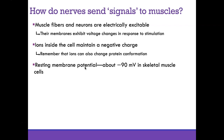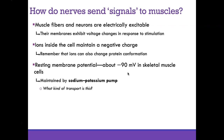The resting membrane potential of a skeletal muscle cell when not contracting is about negative 90 millivolts. At rest, a muscle cell has a negative charge of −90 mV. This negative charge is maintained by the sodium-potassium pump, which ensures very little sodium inside and a lot of potassium inside the cell to maintain resting membrane potential.